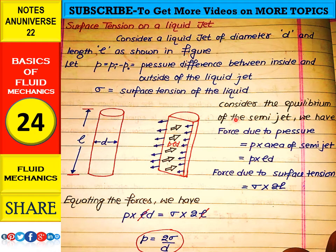Consider the equilibrium of the semi jet. We have force due to pressure, that is p times the area of the semi jet. P is the pressure difference, and area of the jet is length times diameter. This is a rectangle.